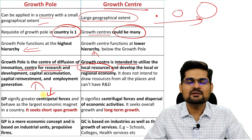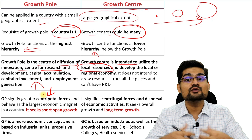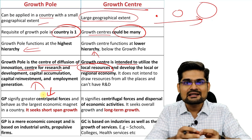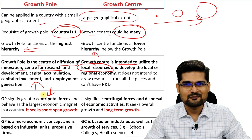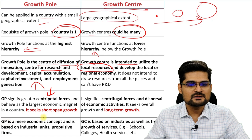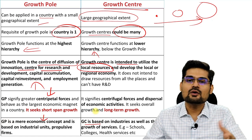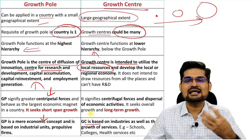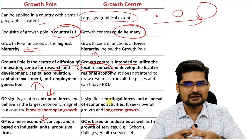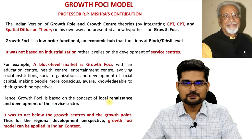Growth pole signifies a centripetal force — incoming things — while centrifugal force is more prominent in growth center, as it starts organically and diffuses outward. So growth pole is centripetal in nature while growth center is centrifugal. Growth pole is merely an economic concept, while growth center is based on services, growth, and other factors, making it more socio-economic and geographical in nature.